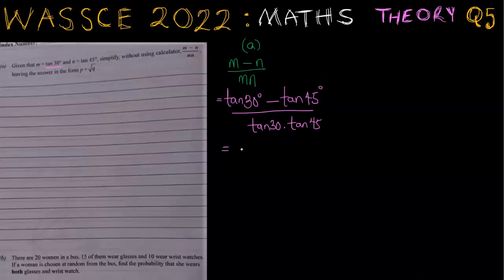In that video, we found that tan 30 degrees is 1 over the square root of 3 and tangent of 45 is 1. So this becomes 1 over root 3 minus 1, divided by 1 over root 3 times 1.